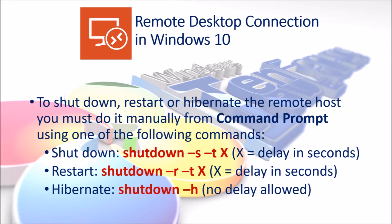To shut down, restart, or hibernate the remote host, you must do it manually from the command prompt using one of the following commands. To shut down: shutdown -s -t X, where X is the delay in seconds. To restart: shutdown -r -t X. To hibernate: shutdown -h. No delay is allowed with hibernate.